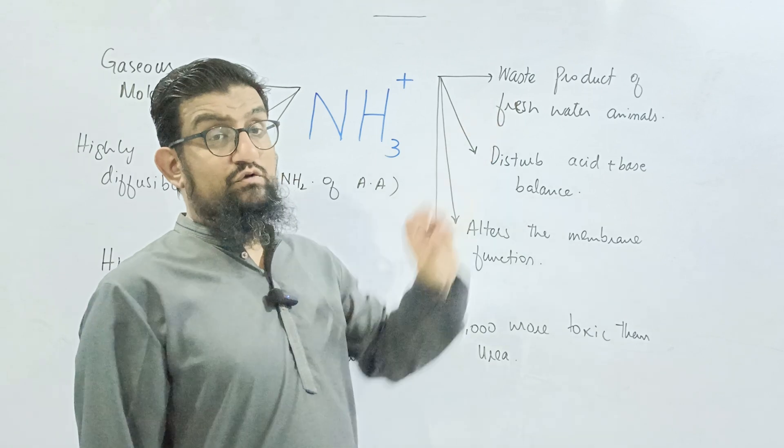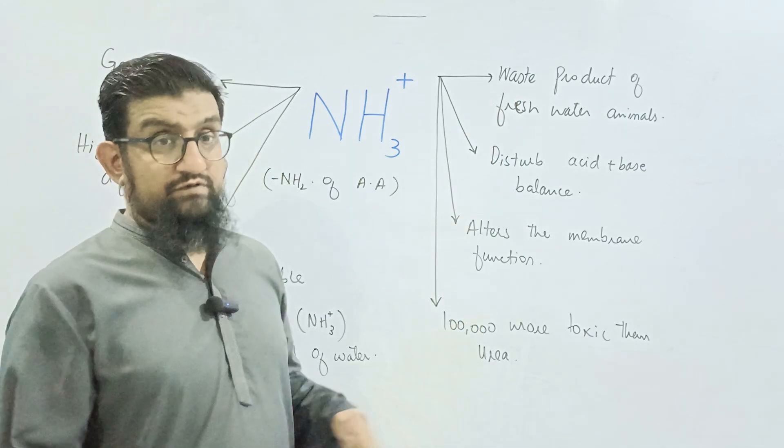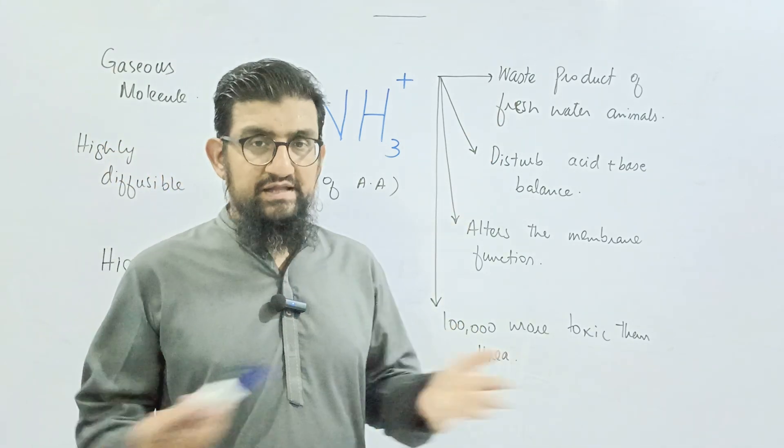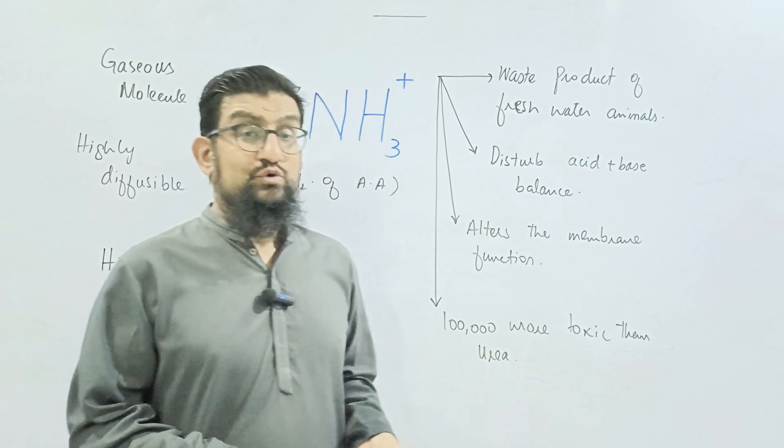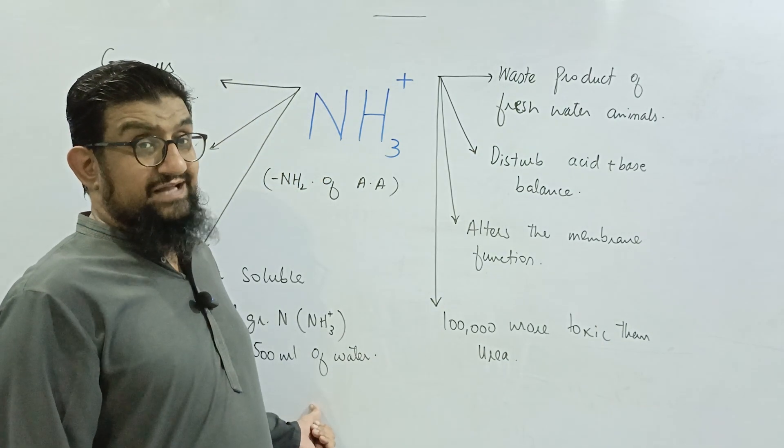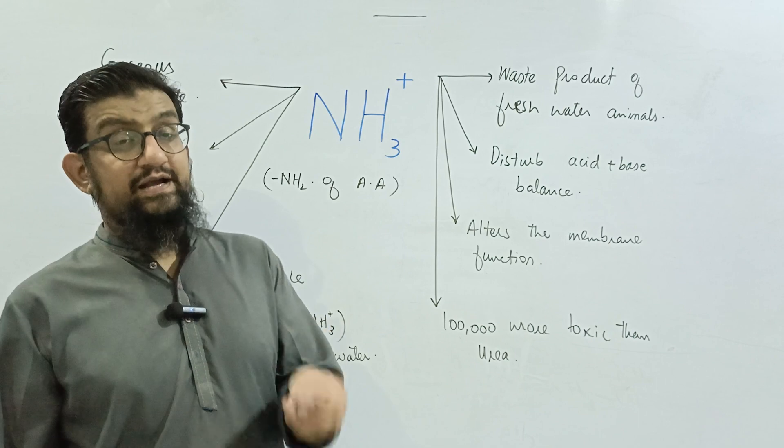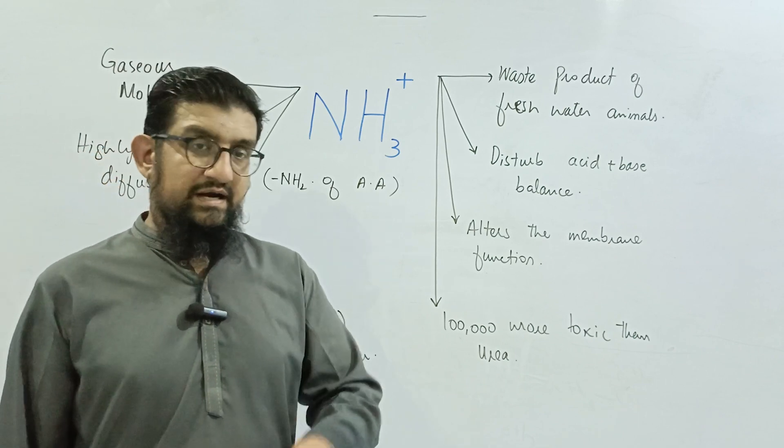That's why ammonia is a waste product of freshwater animals only. Now we animals, we human beings and other animals who live on land, do not have that much water. That's why we convert ammonia into less toxic materials and then remove that material from our body, like urea and uric acid.